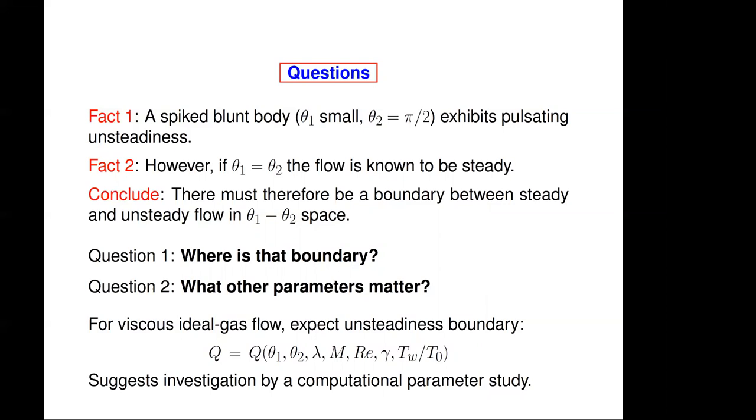Take fact one: a spiked blunt body exhibits pulsating unsteadiness. Fact two: However, if theta one equals theta two, the flow is known to be steady. So we conclude that there must be a boundary between steady and unsteady flow in the theta one, theta two space. Question one: where is that boundary? Question two: what other parameters matter?